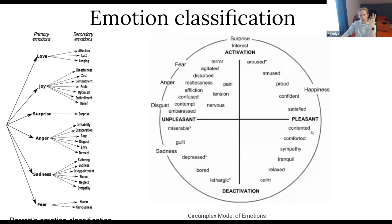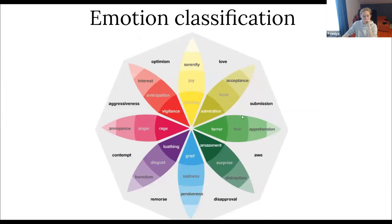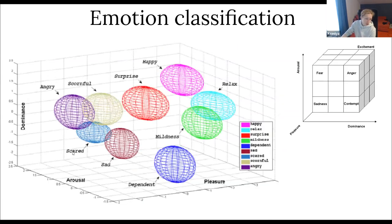For example, happiness is when you are pleasant and a little bit active. Arousal represents the vertical axis and valence represents the horizontal axis, while the center of the circle represents neutral valence and a medium level of arousal. There are also other models of emotions, for example a three-dimensional model with one more axis — dominance.